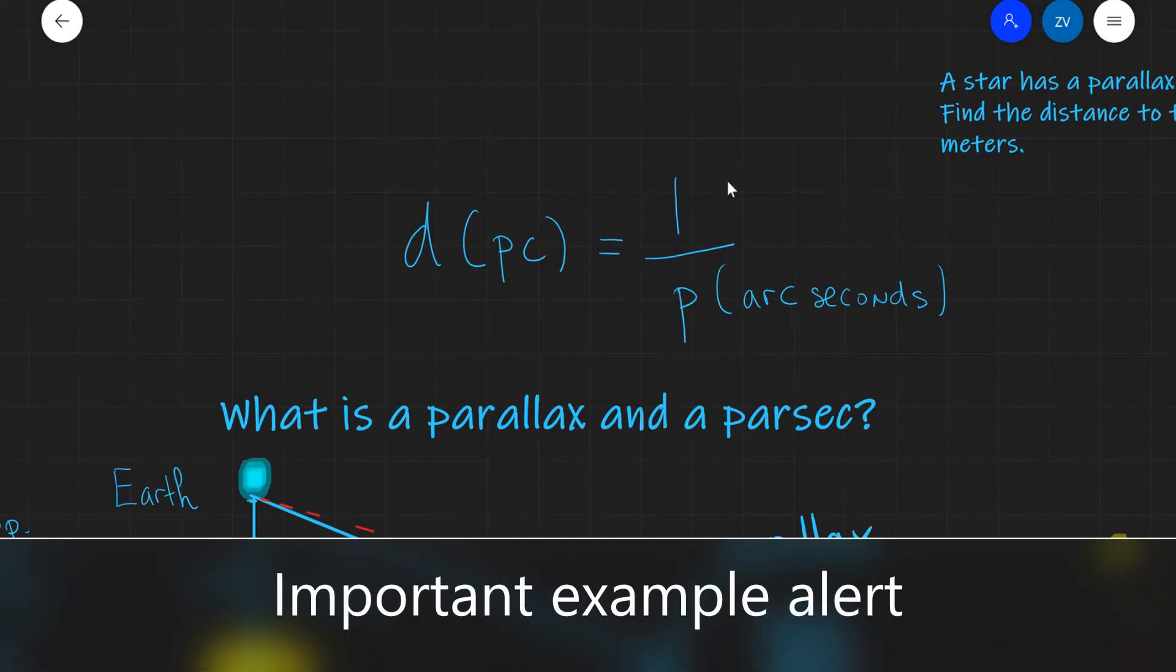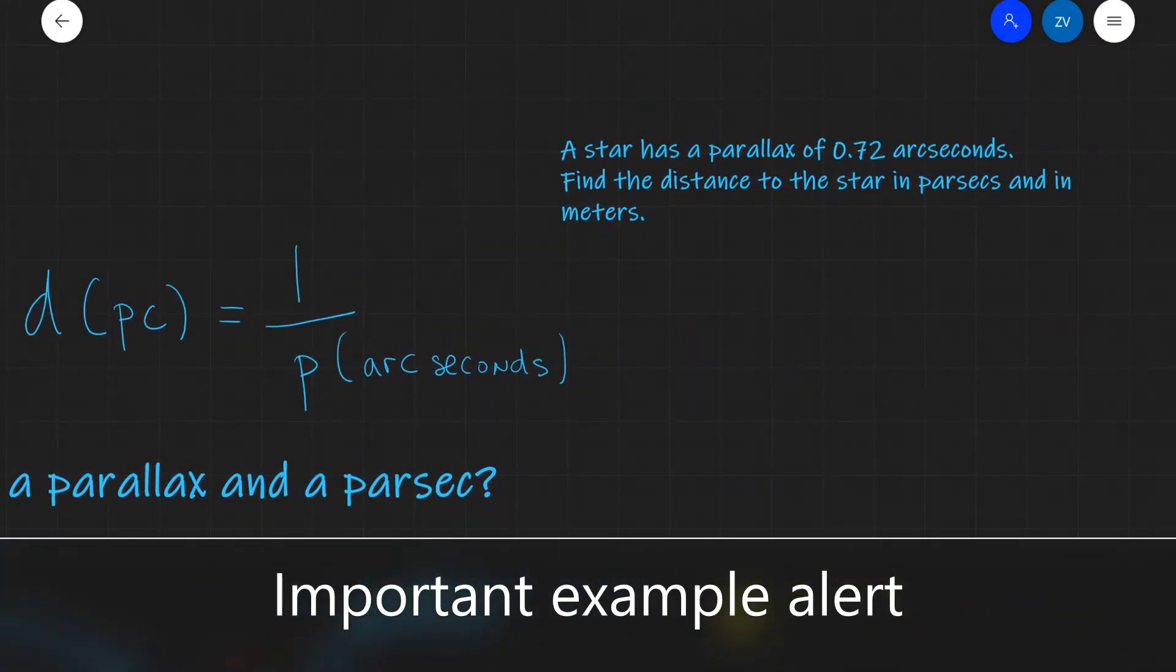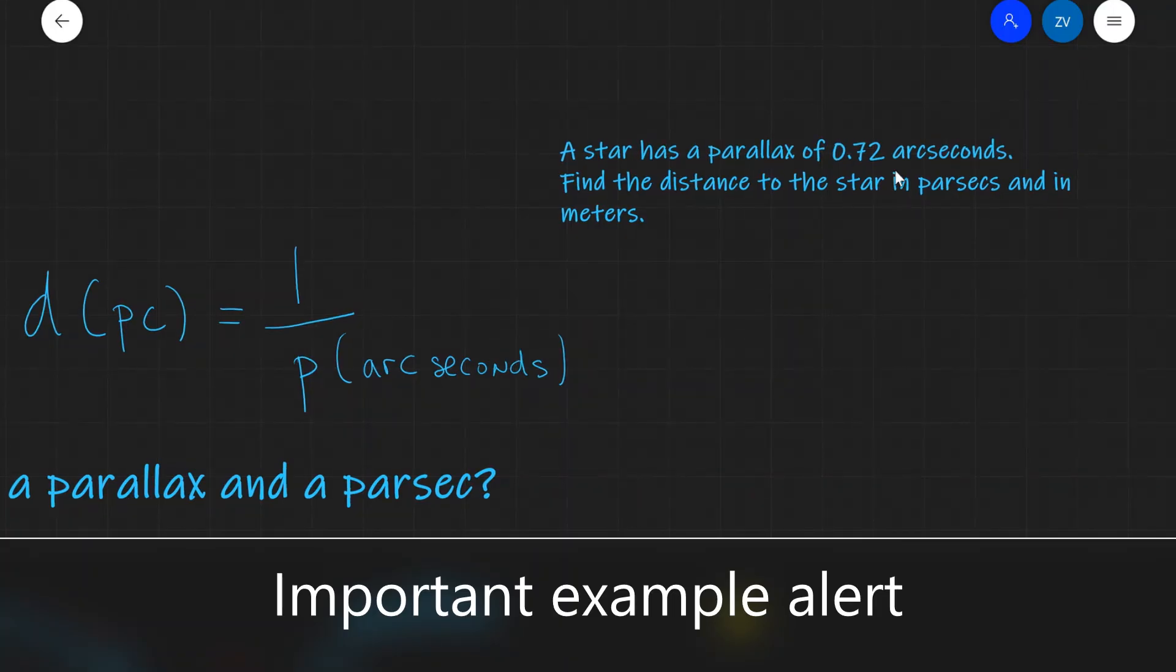Let's apply this formula to a simple example over here. We have a star which has a parallax of 0.72 arc seconds. Find the distance to a star in both parsecs and in meters. Okay, well, remember, in this case, if I'm given the parallax angle, I can find my distance in parsecs. Just by going that distance is 1 over p, which is equal to 1 over 0.72. If I put that into a calculator, we get 1.38 parsecs.